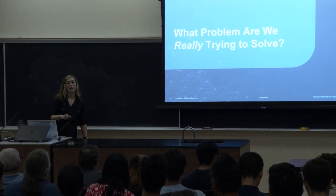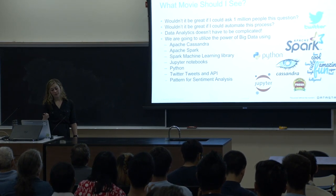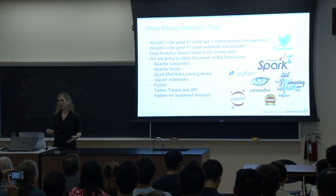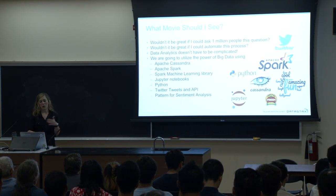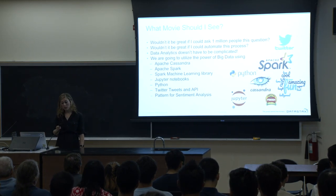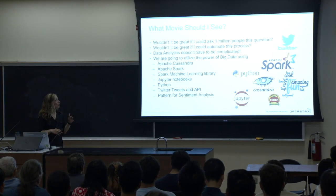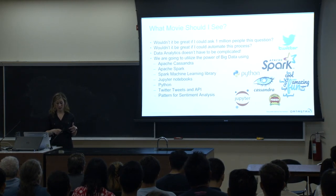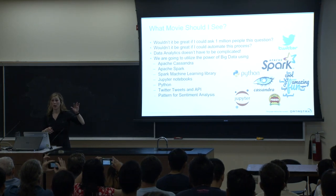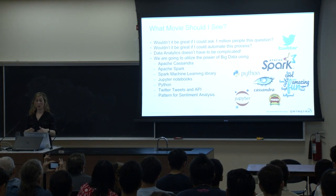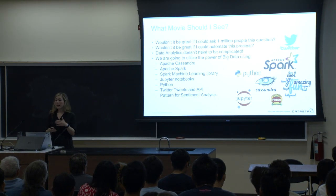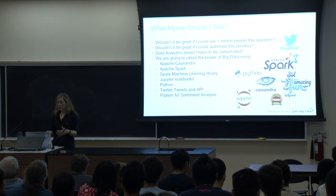So what problem are we really trying to solve? What movie should I see? Wouldn't it be great if I could ask one million people this question — not just my coworkers, not just my friends — and completely automate this process? To do this, we're going to utilize the power of big data using Apache Spark, Apache Cassandra, Spark Machine Learning Libraries, Jupyter Notebooks, Python, the Twitter API, and a pattern package for sentiment analysis. Data analytics doesn't have to be complicated. It can be something as simple as movie reviews.